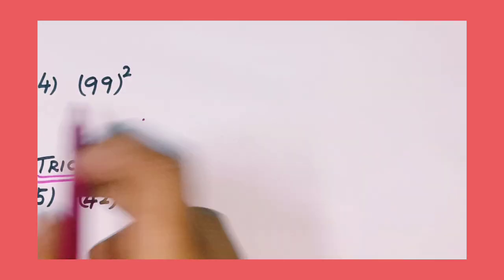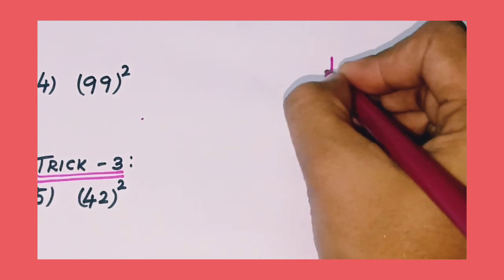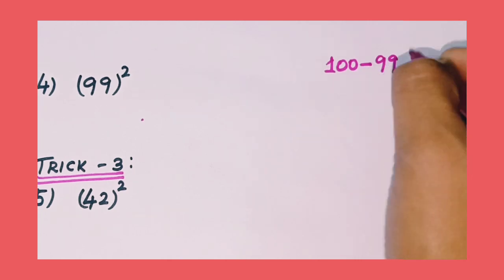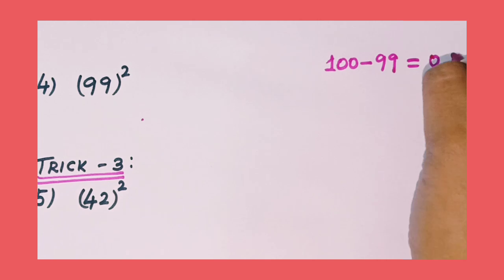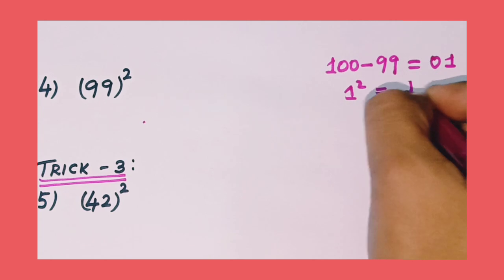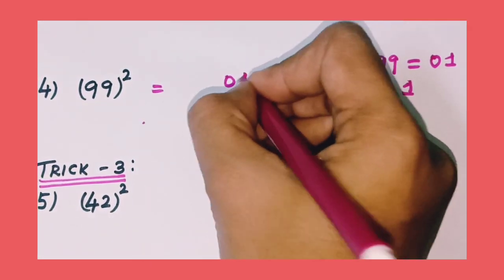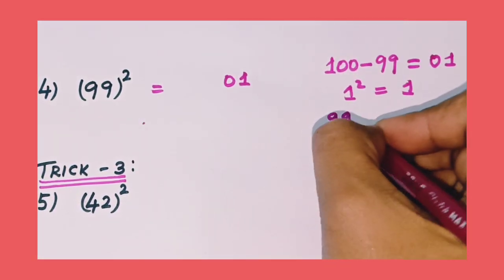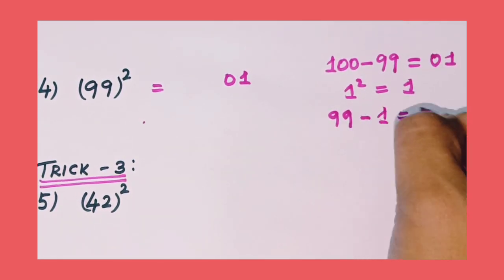Next question: 99 squared. The nearest number is 100, so the base is 100. 100 minus 99, the difference is 1. 1 squared is 1 — write as a 2-digit number: 01. 99 minus 1 equals 98. The final answer is 9,801.